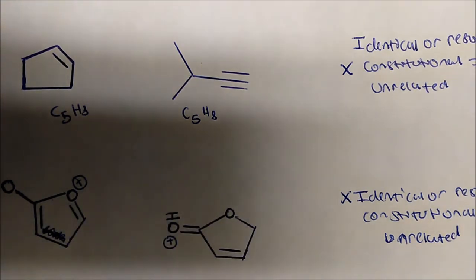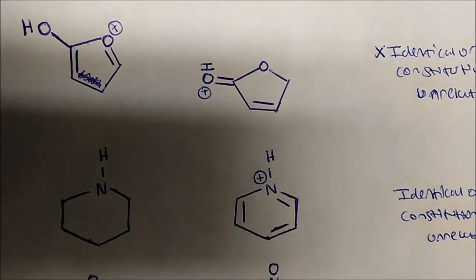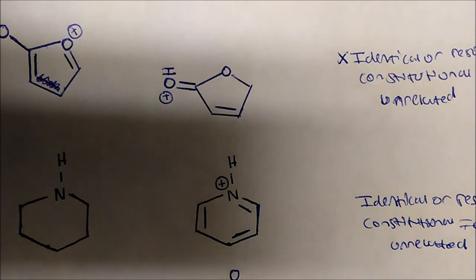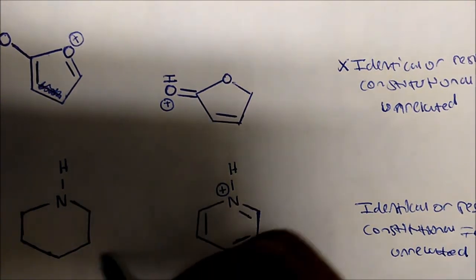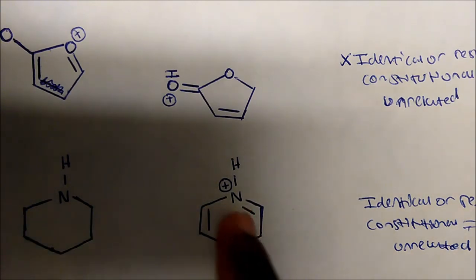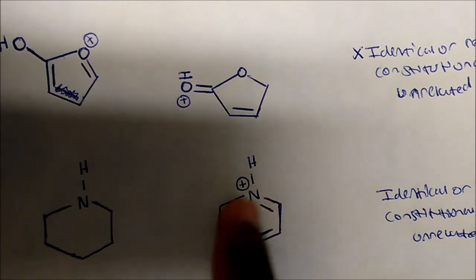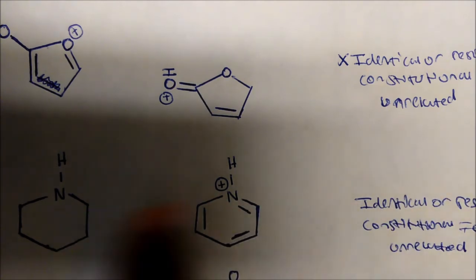These are what we consider identical or resonance. This double bond should actually be there — now that makes sense. Now how about this next pair? The first thing we look at is the molecular formula. You can see the molecular formulas are not even the same: here I have one hydrogen, one hydrogen; here I have two hydrogens, two hydrogens. So there's an abundance of hydrogen on one versus very little on the other. We know these are not identical or resonance — we're not moving any atoms.